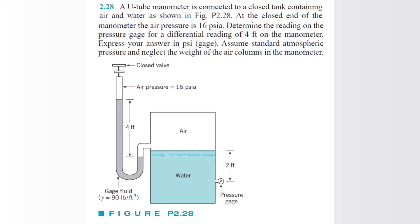At the closed end of the manometer, the air pressure is 16 psi. Determine the reading on the pressure gauge for a differential reading of 4 feet on the manometer.